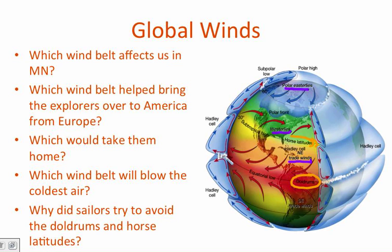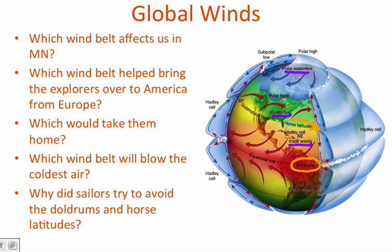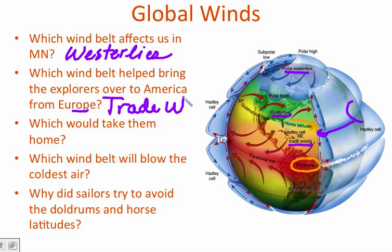A couple questions on the right-hand side to go over the diagrams that we just completed. Which wind belt would I say affects us in Minnesota? Being at 45 degrees, the Minnesota wind belt would be the westerlies. The wind belt that would help bring explorers from Europe over to America. Europe, of course, being over here, they would need to move this direction to get to the Americas. That would be the trade winds. That kind of gives you a little clue about what their name came from. Those winds were used to bring materials and goods over to the Mexico and the Americas. To get back home then to Europe, they couldn't travel against the wind as they were only in sailboat, so they had to hop a little bit north to the westerlies to take them home.